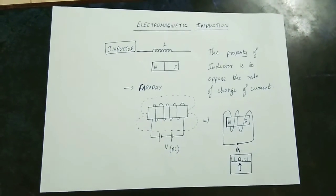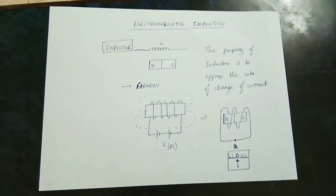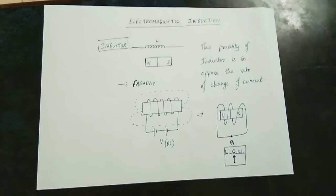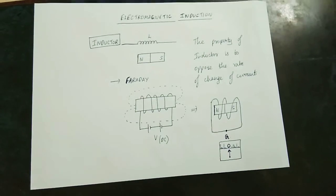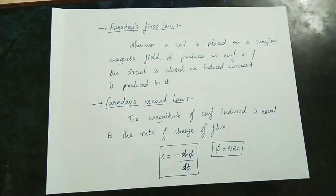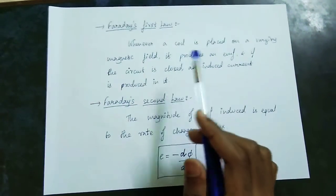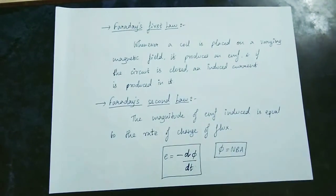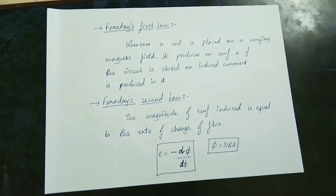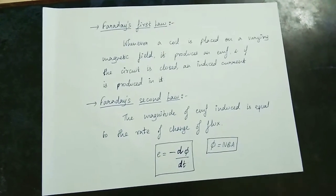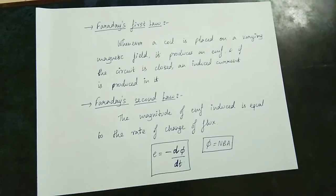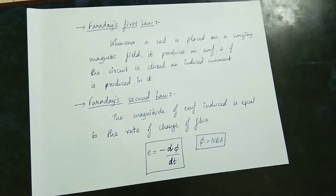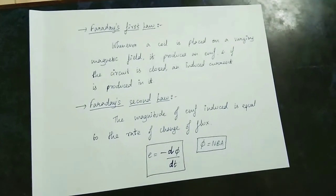There are a lot of laws that were proposed. The first law states: whenever a coil is placed in a varying magnetic field, it produces an EMF, and if the circuit is closed, an induced current is produced in it. This is electromagnetic induction.